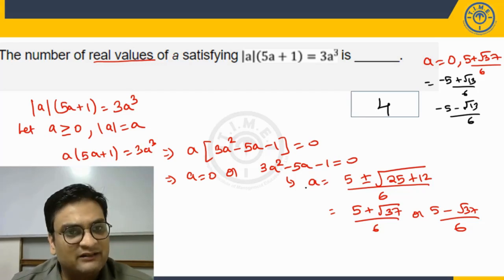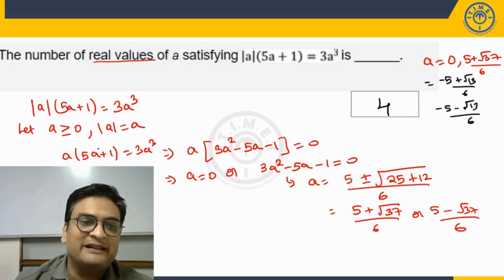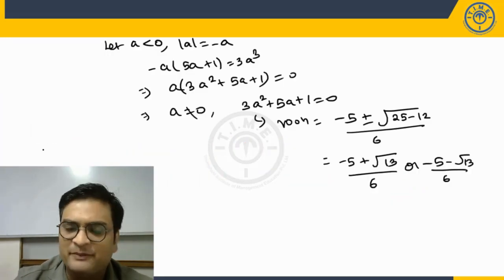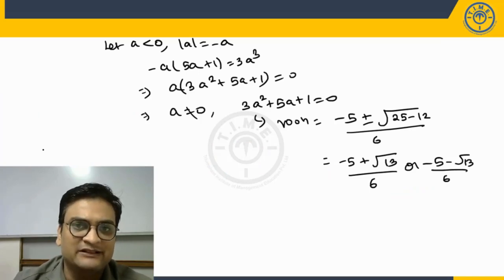So whenever you have a mod, advice would be generally in most of the problems, get rid of the mod by taking ranges for a, the number inside the mod. Greater than or equal to 0, less than 0, etc. Try to break it down into cases and solve. That would be a better way to deal with questions involving modules.